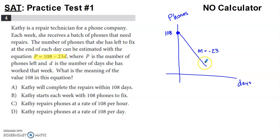So I'm just going to show a line that's going down. And if you think about what P and d represent here, it should make sense to say that after Kathy has worked for one day, she's going to have less phones to fix. After she's worked for two days, she's going to have less phones to fix. So as the number of days goes onward, she's going to have fewer and fewer phones remaining to be fixed over the course of time.